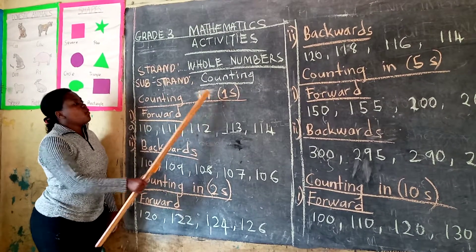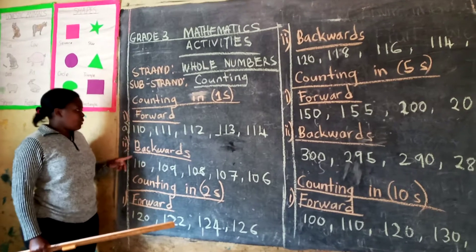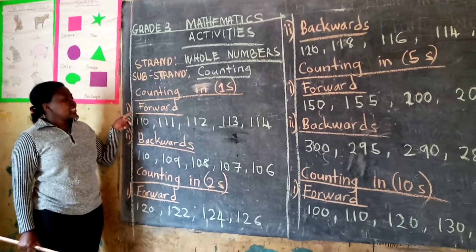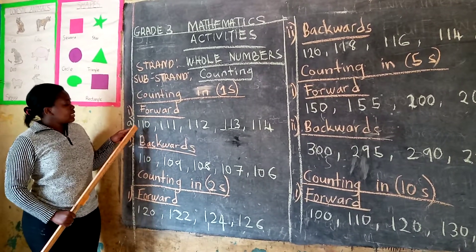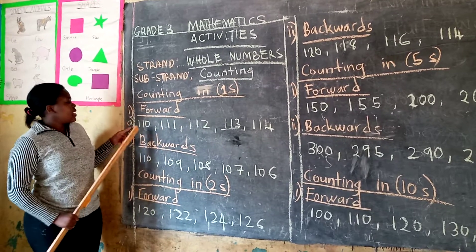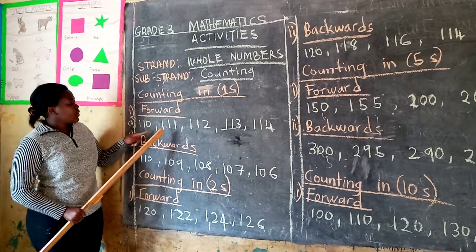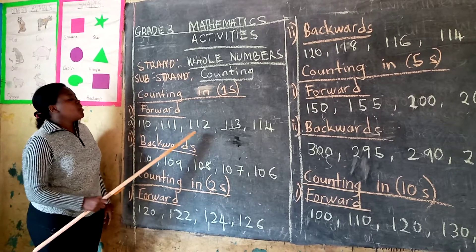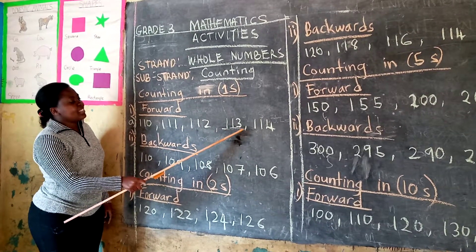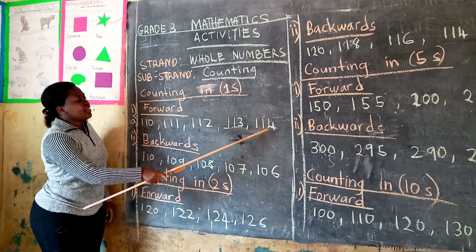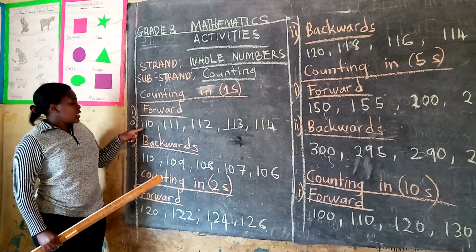We are counting in ones, forward. But first of all, we are going to focus on counting forward. Here are some numbers that I've written: 110, 111, 112, 113, 114. Remember, we are counting in ones.